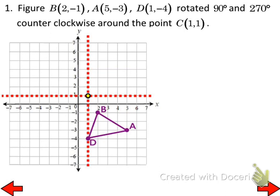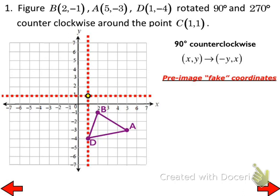I'm going to use that as my new coordinate system so that I can utilize those rules. But before I do that, I've got to change the ordered pairs for my pre-image. Since this is my new coordinate system, B is no longer at (2, -1). In my new coordinate system, where is B? It's at (1, -2). This is now the origin right here.